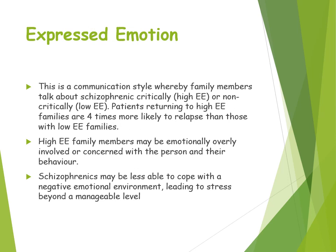Another family dysfunction explanation is expressed emotion — a communication style whereby family members either talk about the schizophrenic critically, described as high expressed emotion (high EE), or in a non-critical way, so low EE. Research suggests high EE families are more likely to result in a patient relapsing — four times more likely to relapse than if they returned to a low EE family. Members of a high EE family are emotionally overly involved, which means schizophrenics may be less able to cope, leading to stress beyond a manageable level and resulting in relapse or development of schizophrenia.